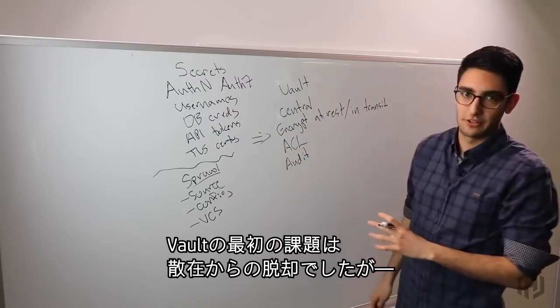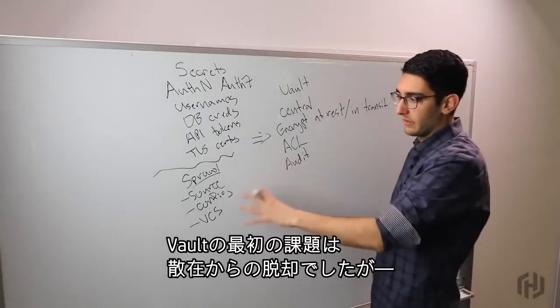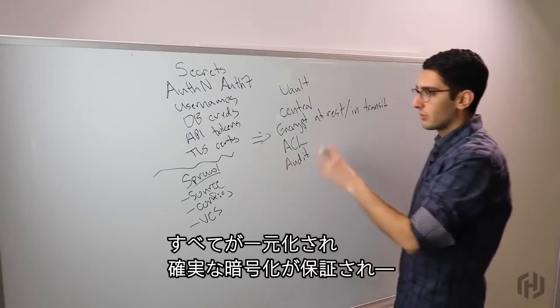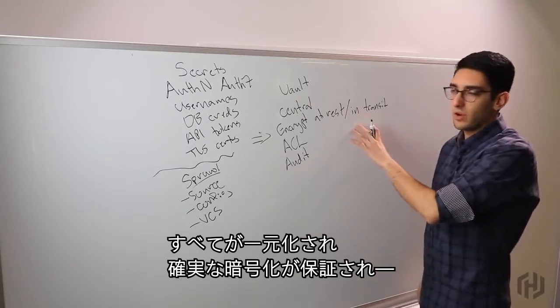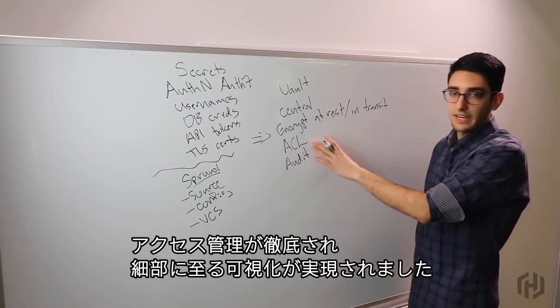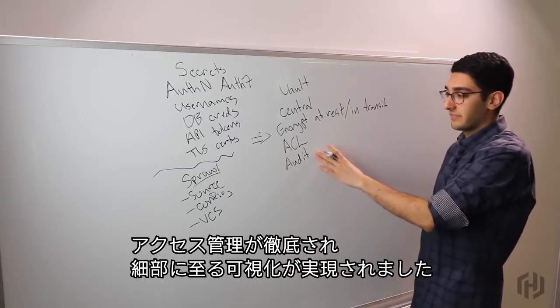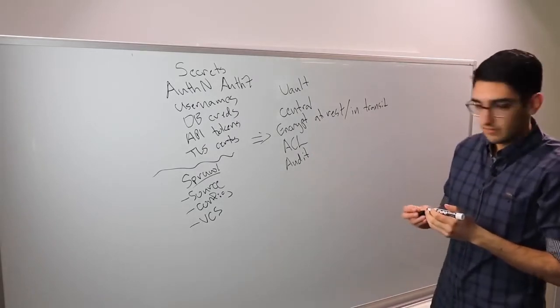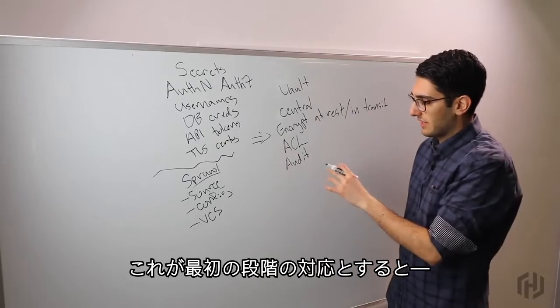This is sort of the level one challenge with Vault, at least moving from a world of sprawl where things are everywhere to a world of centrality where we have strong guarantees that it's encrypted, strong guarantees around who has access, and strong visibility into this. This becomes our first level thing.